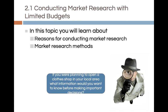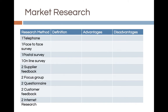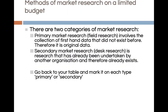Here's a table that you should pause and write down in your exercise books, and return to as we go through this PowerPoint. In the first column you've got a range of specific research methods: telephone, face-to-face surveys, postal surveys, online surveys, supplier feedback, focus groups, questionnaire, customer feedback, and internet research. You can probably understand what all those research methods entail, with the possible exception of a focus group, which we'll go into later.